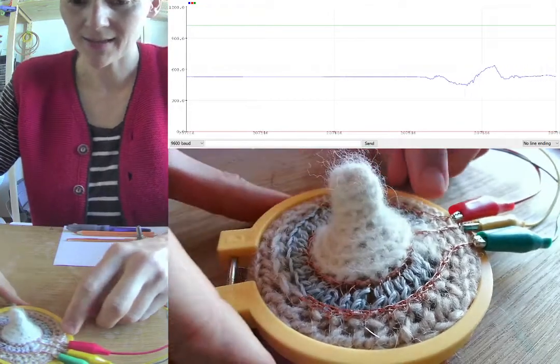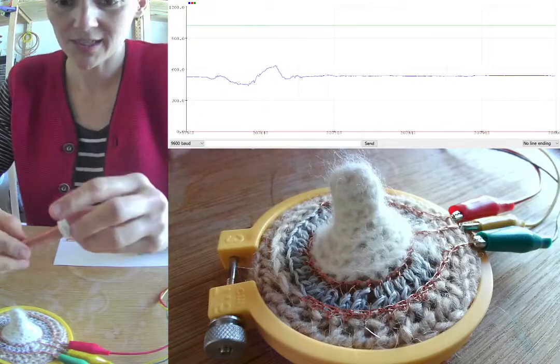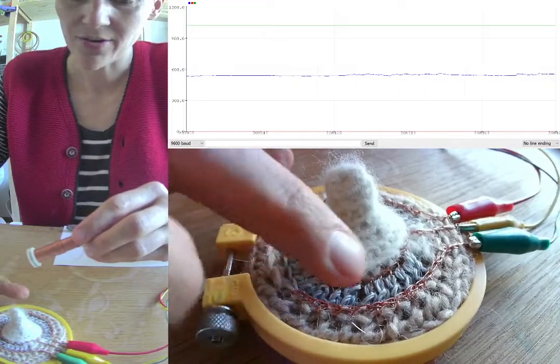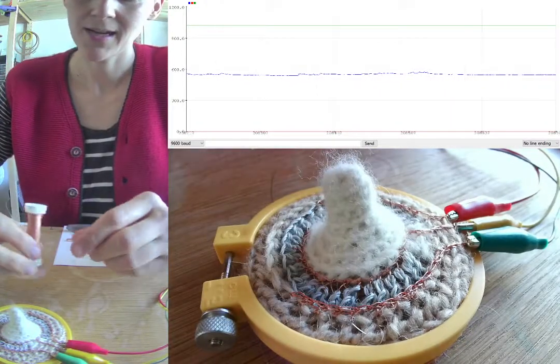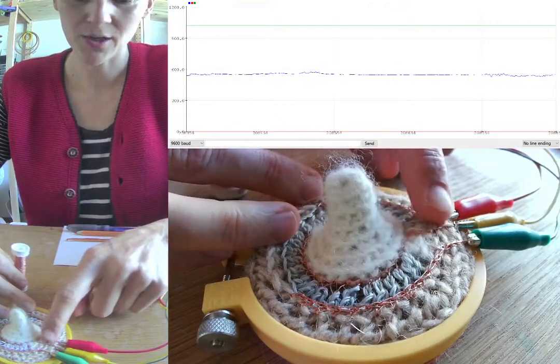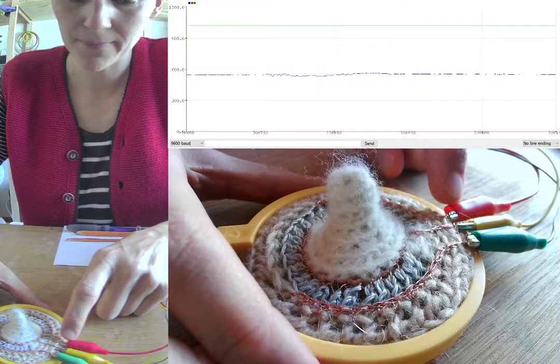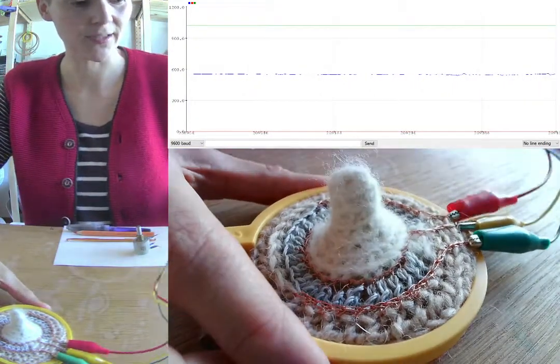And then there's a copper thread, crocheted on either side of this kind of variable resistive yarn. And the copper thread then goes to the edge, where alligator clips connect it to a Flora.